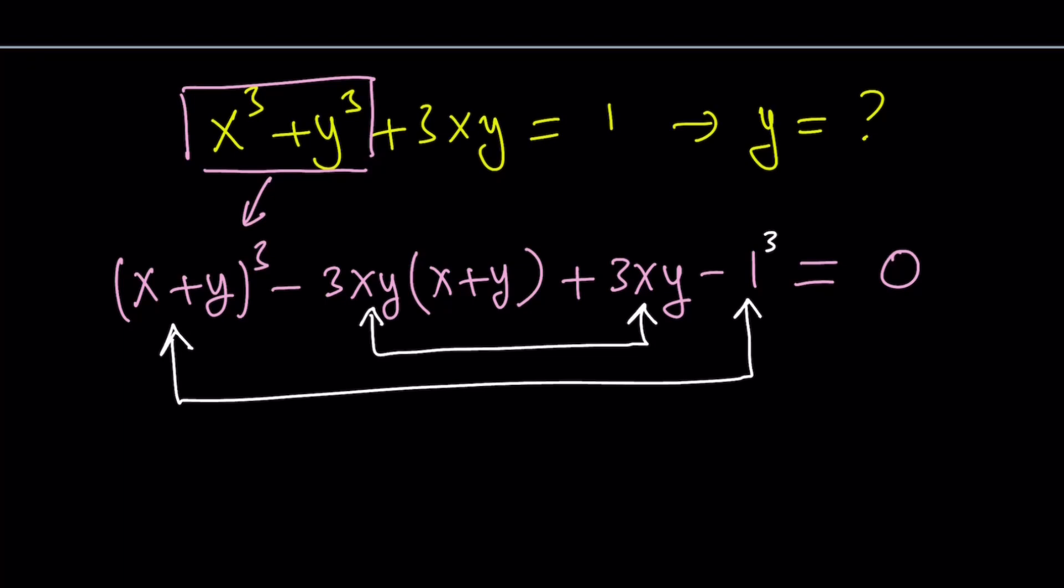It's like difference of two cubes because one can be written as 1 cubed. That's the formula we're going to use. Let's write it this way first: x plus y cubed minus 1 cubed, then minus 3xy. We take negative 3xy out, so it's x plus y minus 1.